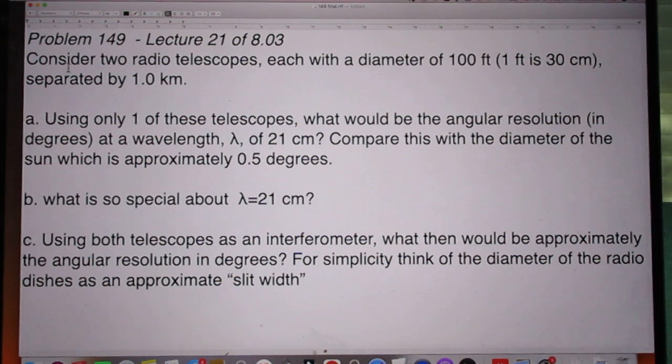Read with me. Consider two radio telescopes, each with a diameter of 100 feet. One foot is close to 30 centimeters. They are separated by one kilometer.